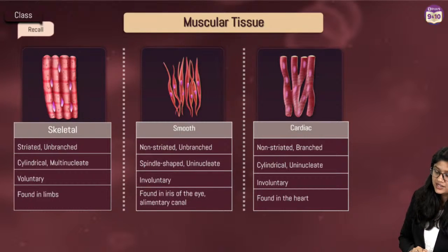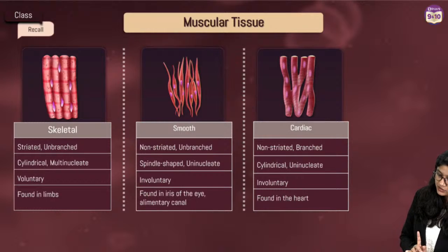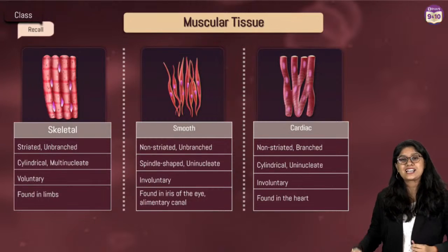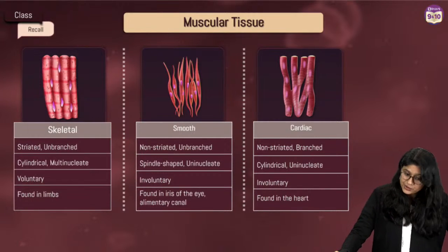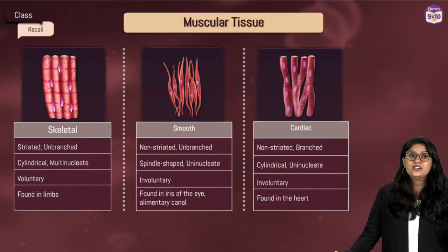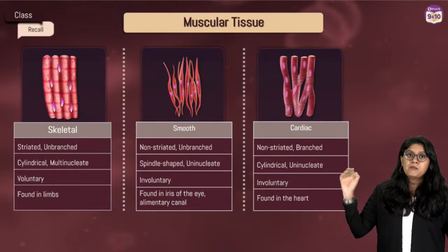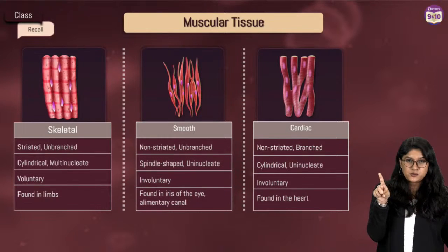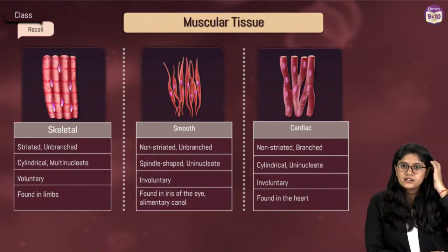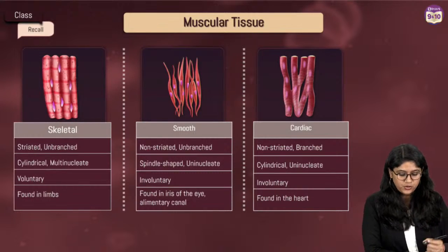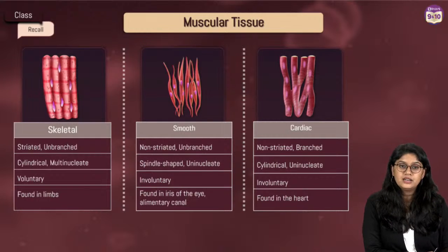Smooth muscles are also involuntary in nature — unbranched, spindle-shaped, uninucleated, found in the eyes and alimentary canal. Skeletal muscles are the ones we can control — they are striated, unbranched, cylindrical, and multi-nucleated. Multi-nucleated is very important: only skeletal muscles are multi-nucleated; smooth and cardiac muscles are uninucleated. Skeletal muscles are voluntary in nature and found in the limbs.